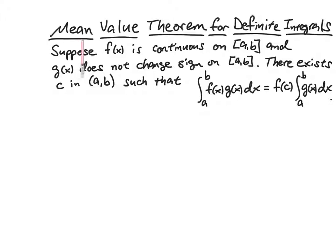We're going to use the fact that f(x) is continuous on this interval [a,b], and this may seem a little bit strange, but g(x) does not change sign. That means g(x) will always be positive or always be negative on [a,b]. The conclusion of the proof goes that there exists some c in the open interval (a,b).